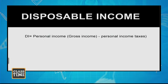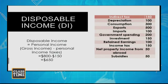Finally, disposable income is personal income minus personal income taxes. The personal income tax here is $150 (the income tax), so the disposable income figure is $650.